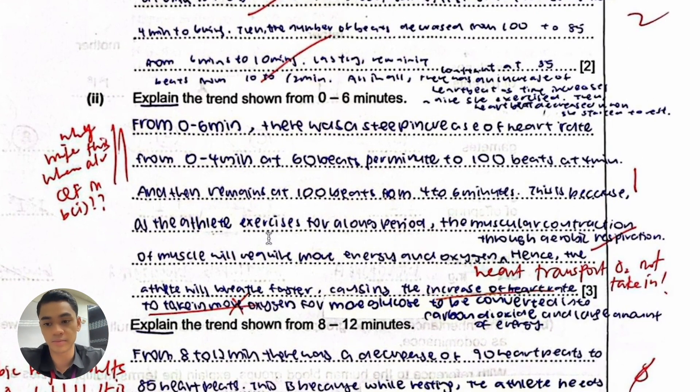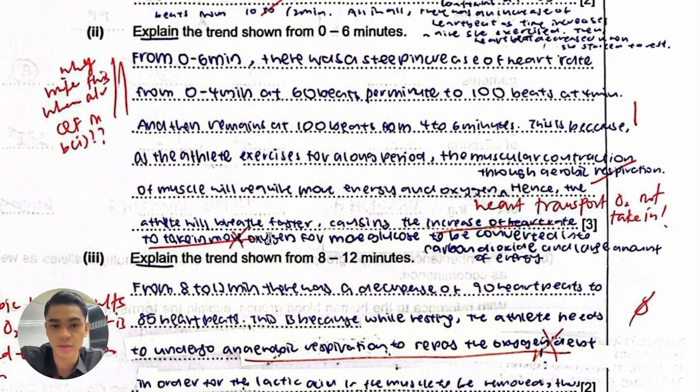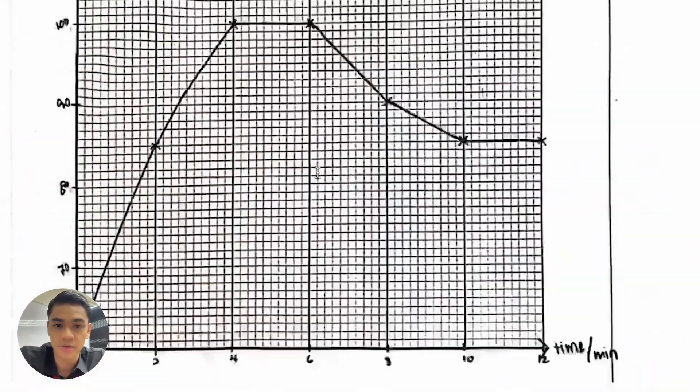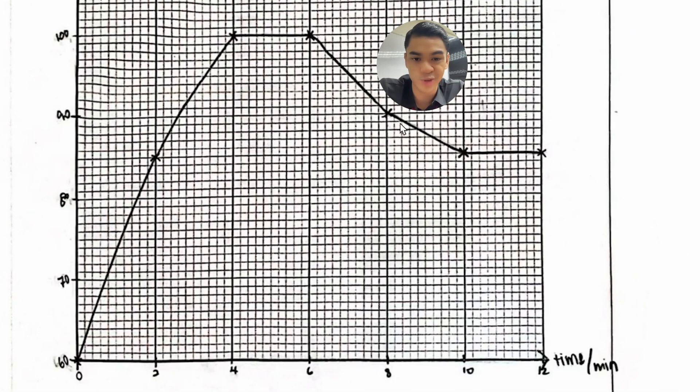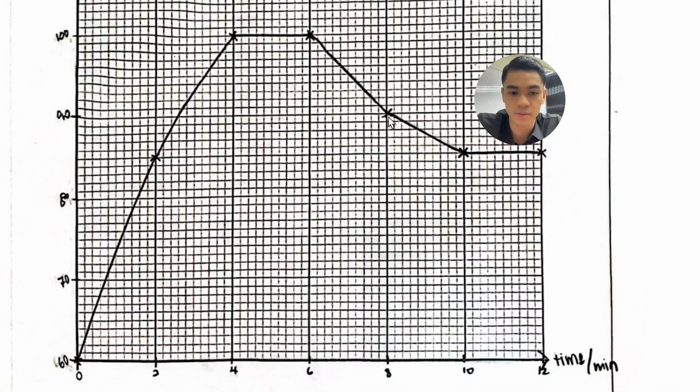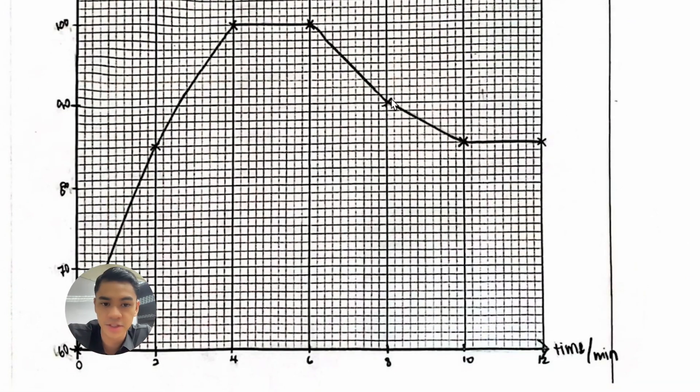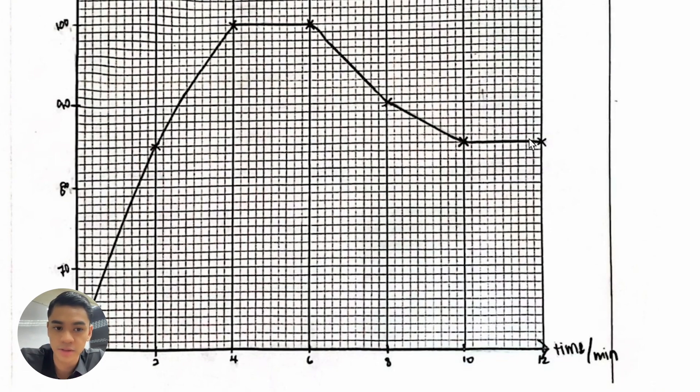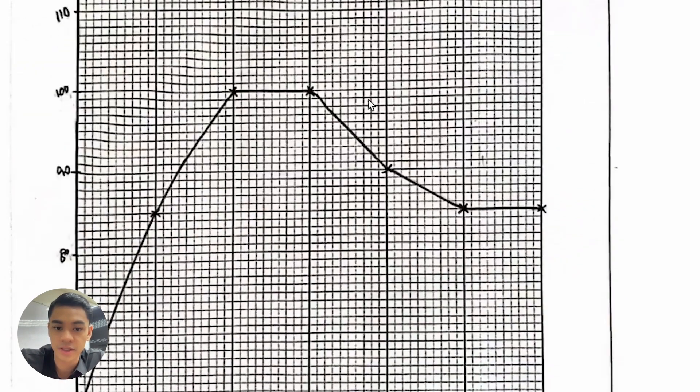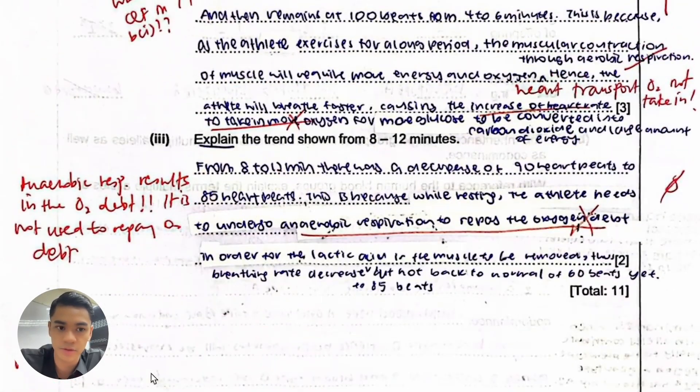Then explain from 8 to 12. Eight to 12 is where it's dropping. Why is it that it dropped a bit and then here it's constant? We just need to talk about why is it dropping but why is it still kind of high even though he's resting and not at zero.